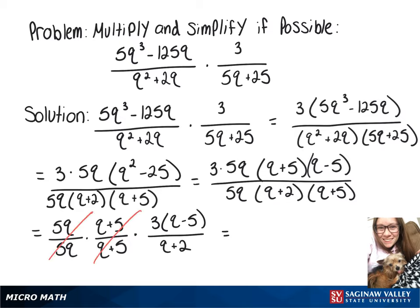We're going to go ahead and distribute that 3 on top, and we'll end up with 3q minus 15 over q plus 2.